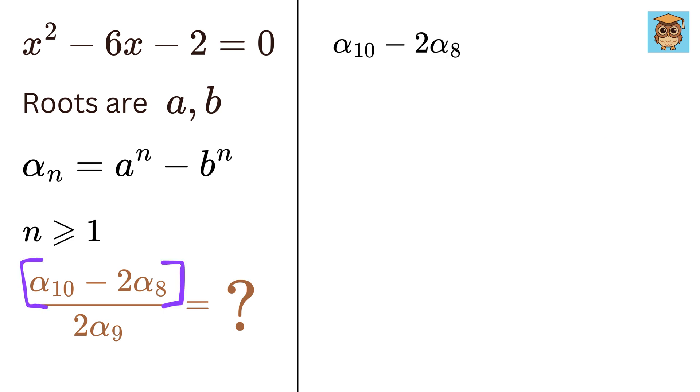Consider this numerator. The value of α_10 will be a^10 - b^10, and the value of α_8 will be a^8 - b^8. So α_10 - 2α_8 will be this term minus two times this term. Now we will take the same variables together.